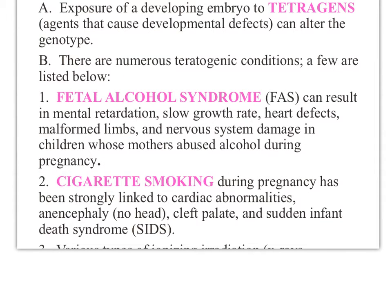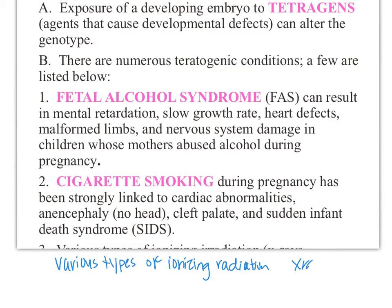Another teratogen is various types of ionizing radiation, such as X-rays and gamma rays. You're not typically exposed to gamma rays, but you might have had a CT scan during early development. This is why radiographers are very careful about shielding anyone who is of childbearing age.